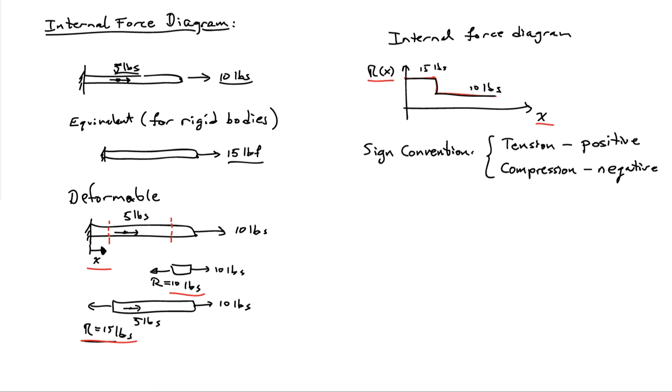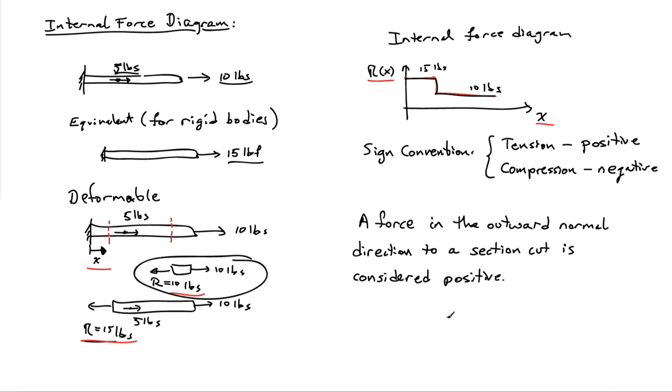So there's a sign convention that you should pay attention to here. And that is when the internal force is positive, then the material is in tension. And if the internal force is negative, then the material is in compression. And the way to get this to work out consistently is that we say that a force in the outward normal direction to a section cut is considered positive. So if I look at my section cuts over here, I had my 10-pound force, and that unit normal, I'll just call it n, on the section cut points off to the left. So when I draw the internal force on the section cut here in that same direction, if it's in that direction, it's going to be positive.